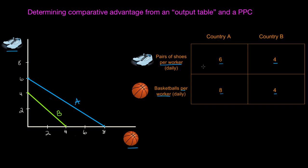To calculate the opportunity costs of shoes and basketballs in these two countries, we can use the following method. We know that for every six pairs of shoes country A produces, it gives up eight basketballs. The resources needed to produce six shoes could also produce eight basketballs. To find the opportunity cost of shoes, all I have to do is divide both sides of this equation by six, and I can see that the opportunity cost of one pair of shoes is eight-sixths, or four-thirds of a basketball.